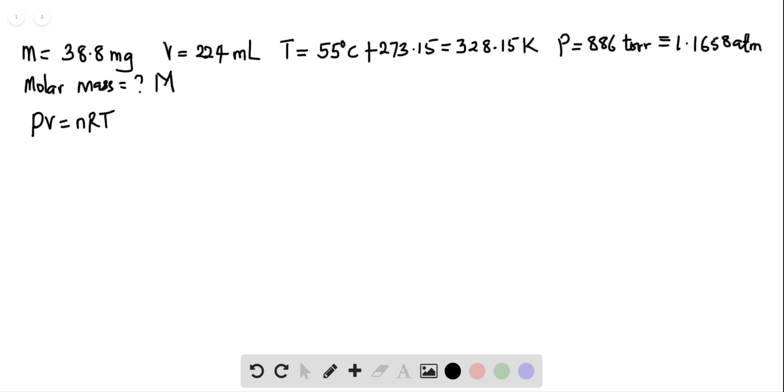So PV equals number of moles, which is mass (small m) divided by molar mass (capital M) multiplied by RT. We are looking for capital M, so we just need to make this capital M the subject of the formula.